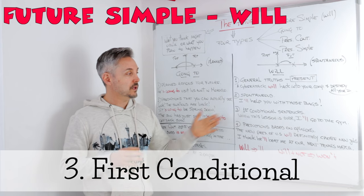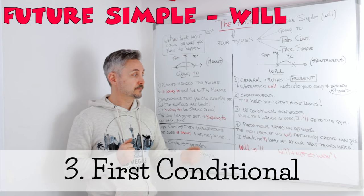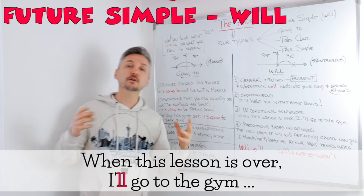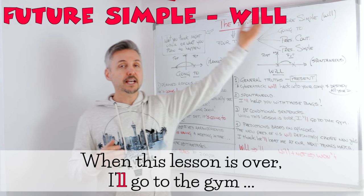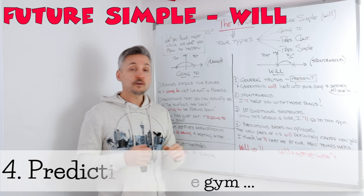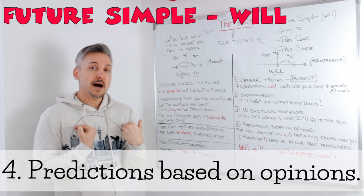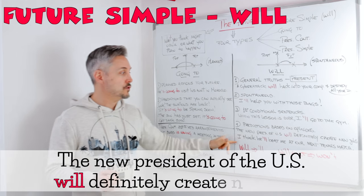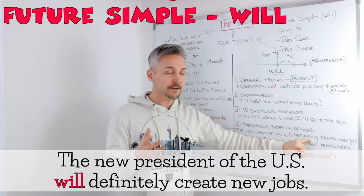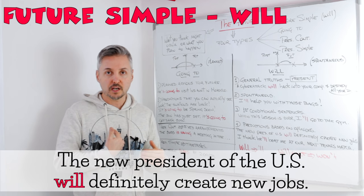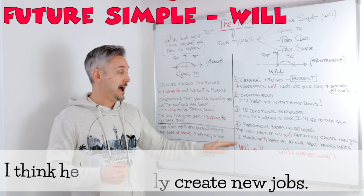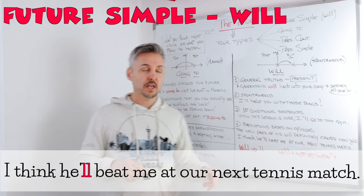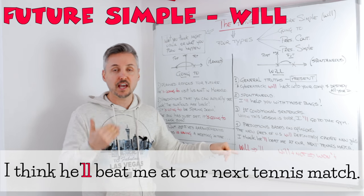We also use 'will' for the first conditional: 'When this lesson is over, I'll go to the gym.' If you want to review the conditionals, you may click here. We also use 'will' for predictions based on opinions — for example: 'The new president of the United States will definitely create new jobs.' This is my prediction, my opinion. Or: 'I think he'll beat me at our next tennis match' — that's my opinion, so I say 'I think I'll' do something.